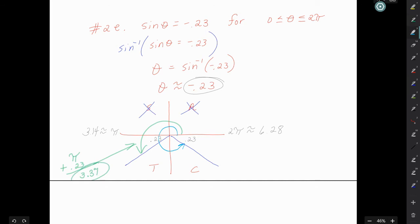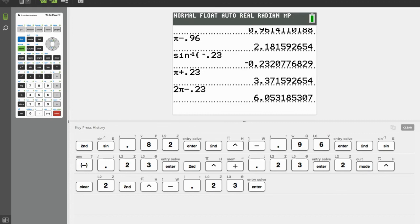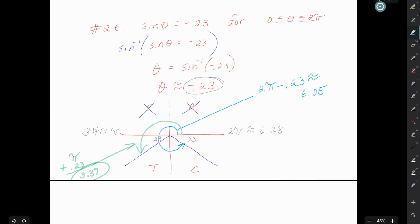Now to find the blue angle, we're going to go not quite all the way until 2π. So we're going all the way almost, but then we have to subtract out that 0.23. So for the blue angle, the blue angle is going to be 2π minus 0.23. We have to subtract that piece out, and we get 6.05. So the solutions for number 2E are 3.37 and 6.05.